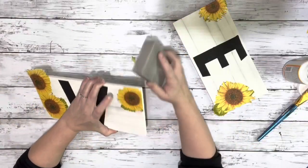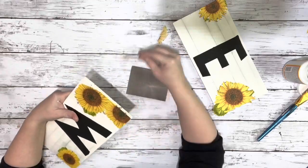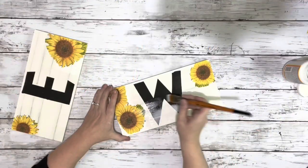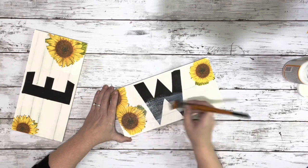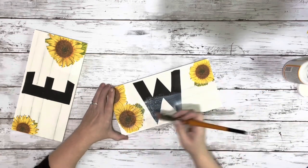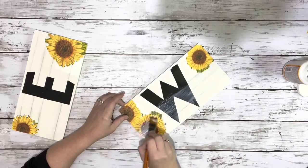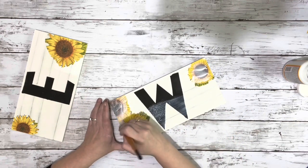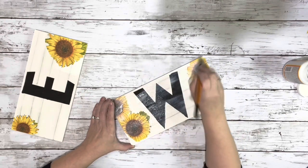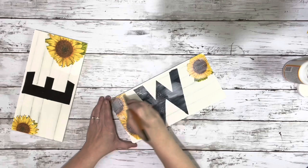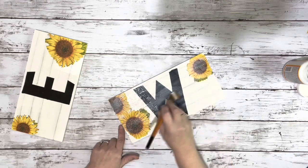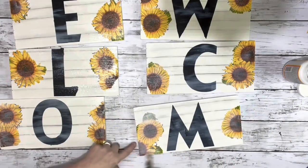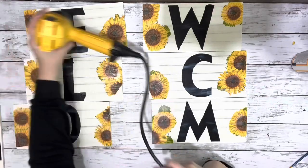And then once all the napkins were on, I just sanded off the excess napkin. And then once the sunflowers were all on there and sealed on, I used a second layer of Mod Podge, covering the entire front of each piece. Once the Mod Podge was on each of them, I used my heating tool to dry that.